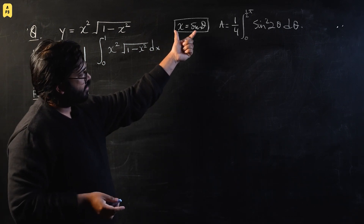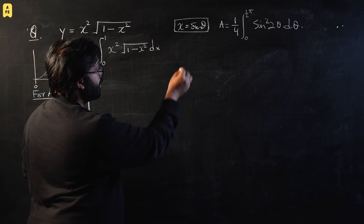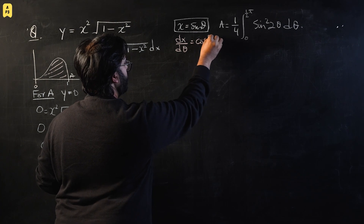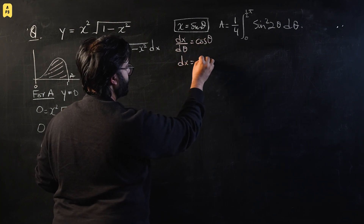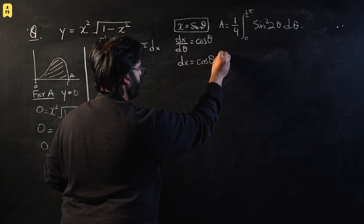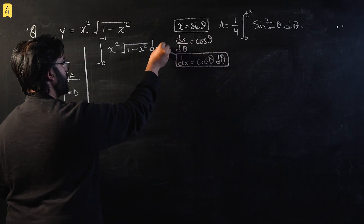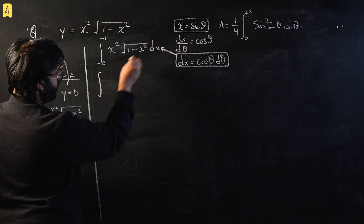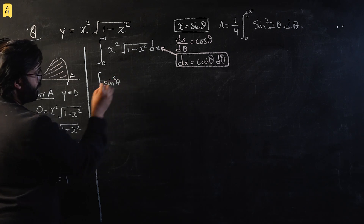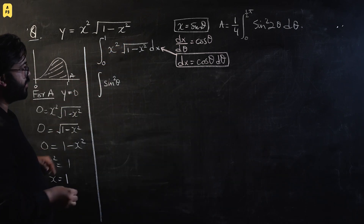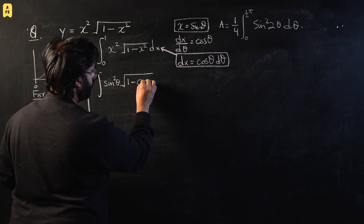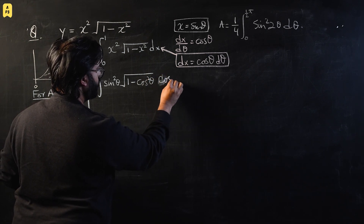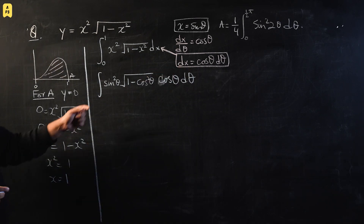Starting the substitution with x equals sine theta: differentiating gives dx/dθ equals cos theta, so dx equals cos theta dθ. Substituting into the integral, x squared becomes sine squared theta and the square root of (one minus x squared) becomes the square root of (one minus sine squared theta).